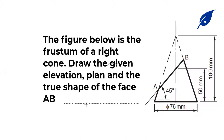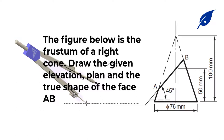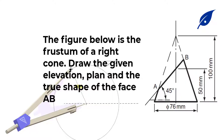We are given the plan and the true shape of the face AB. The information given is: the diameter of the base of the cone is 76 millimeters, the height is 100 millimeters, the height at the point where the cone is cut is 50 millimeters, and at that point the angle is 45 degrees to the horizontal.